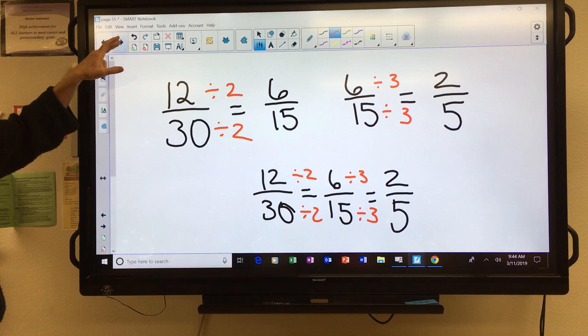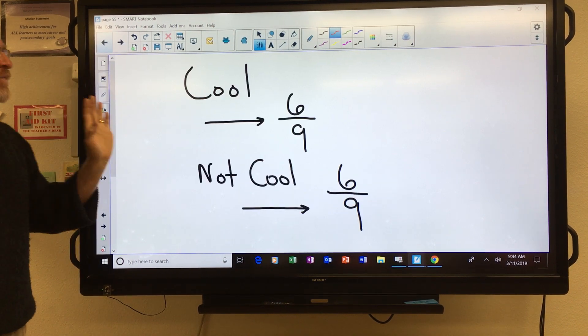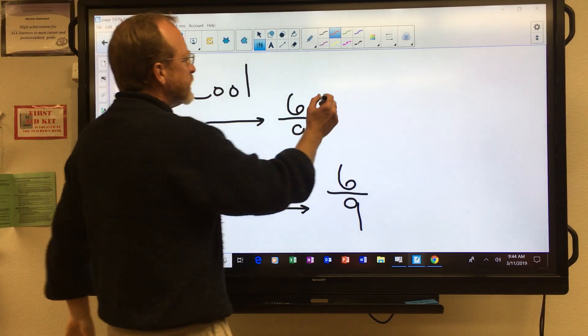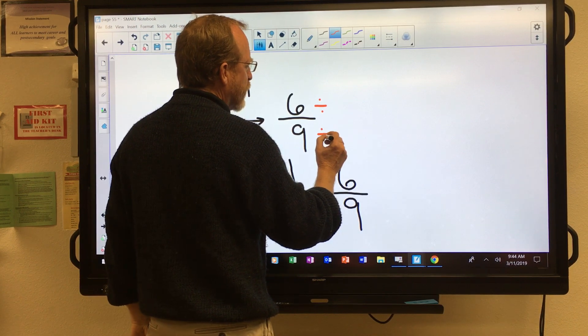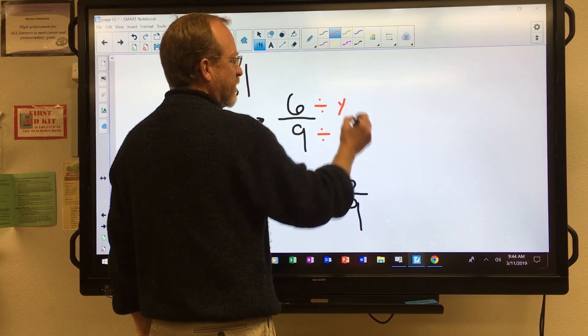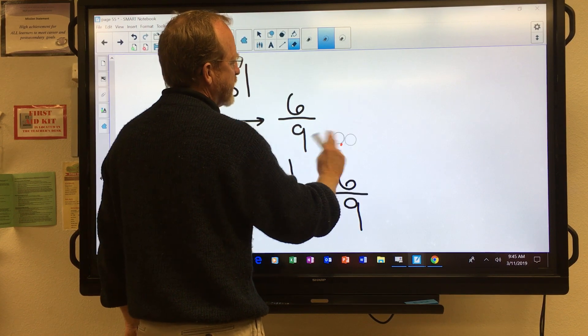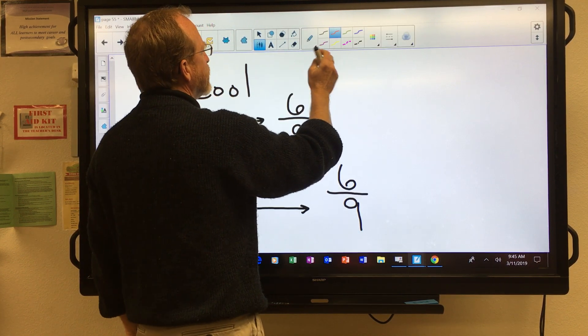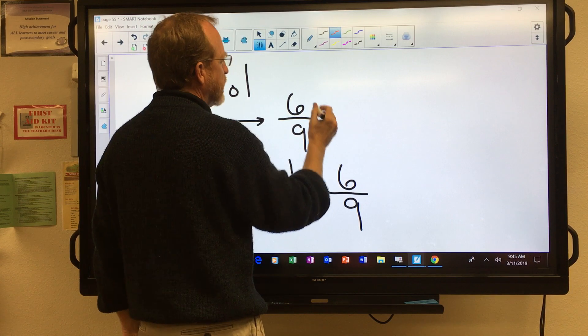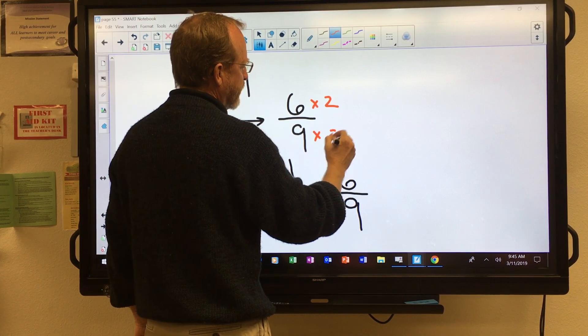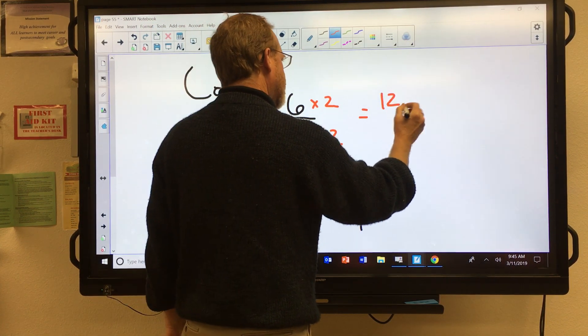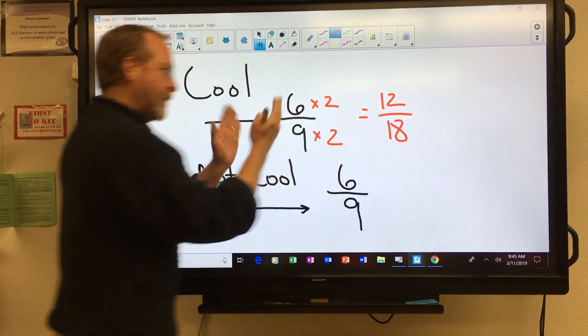Now, one thing, we'll talk about cool and not cool. It's cool to divide or multiply by the same number. So let's multiply, let's say, by two. That's totally fine. I'm going to multiply by two. Answer, twelve, eighteen. That's correct.